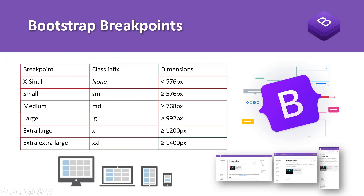Each breakpoint has some dimensions. For example, if your device currently has less than 576 pixels, it will be considered extra small, and all the layouts mentioned for the extra small screen size will be shown on your device. Or if your device is greater than 996 pixels and less than 1200 pixels, it will be considered large screen size, and all layouts mentioned for large screen size will be visible.